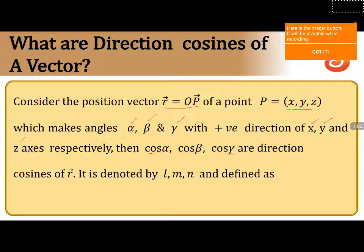The direction cosines are denoted by L, M, and N. So we write L equals cos alpha, M equals cos beta, and N equals cos gamma.